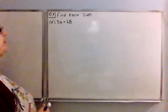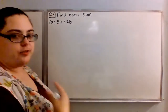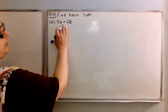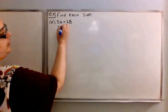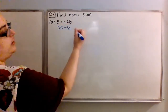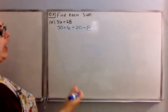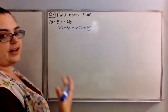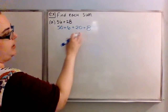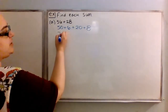The first example I have is 56 plus 28. Using the method that we've been using in the last couple of videos, I can start out by writing 56 as 50 plus 6, and I can write 28 as 20 plus 8. Then I can go ahead and add the numbers that are similar. So I can add the tens: 50 plus 20, I can do 5 plus 2, which gives me 7, so that'll give me 70.